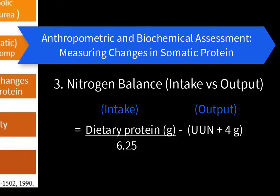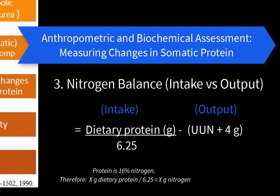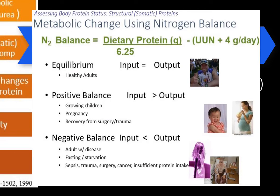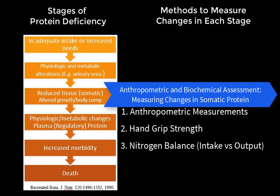Nitrogen balance studies measure the reduction in tissue. The formula: take dietary protein divided by 6.25 to determine nitrogen intake; subtract urinary urea nitrogen output plus a fixed amount of approximately 4 grams per day for losses from hair and skin (which does not change with protein intake). If intake equals output, we are at equilibrium — where most healthy adults are. A positive balance means we are building protein: think children growing, pregnancy, recovery from surgery, or muscle growth from weight training. Negative nitrogen balance occurs with disease, fasting, or starvation, reflecting loss of lean body mass.